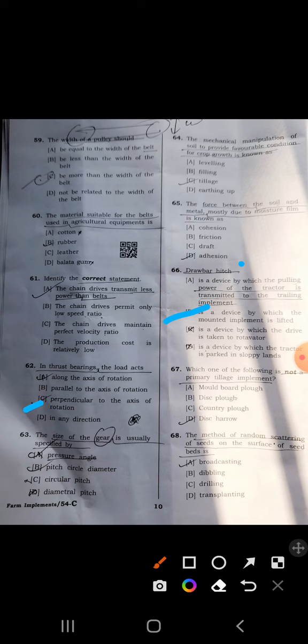Sixty-eighth: method of random scattering of seed on the surface of seed bed is known as broadcasting. B is correct.